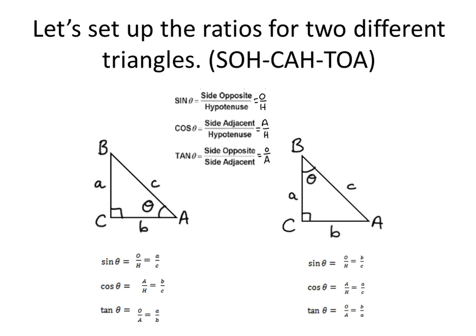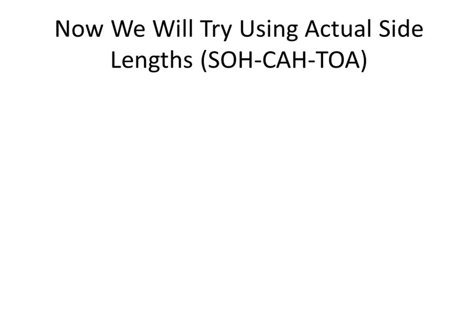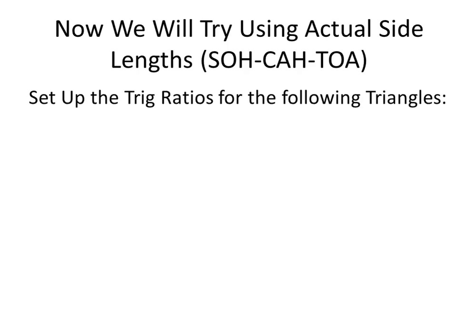Hopefully this is making more sense. Now we'll use actual side lengths. For this triangle, identify the hypotenuse, opposite, and adjacent sides. The hypotenuse is 60, the opposite side is 36, and the adjacent side is 48.